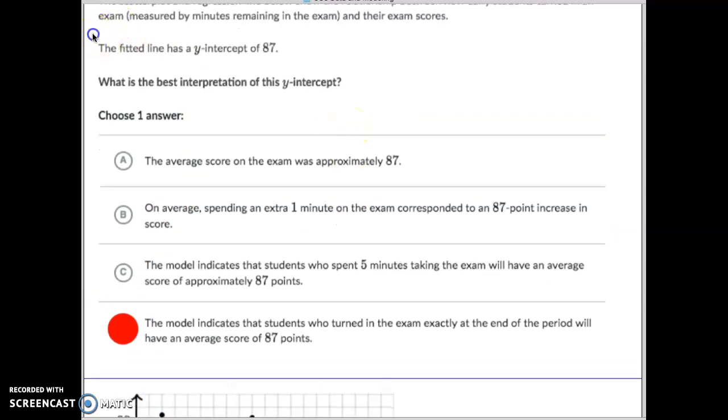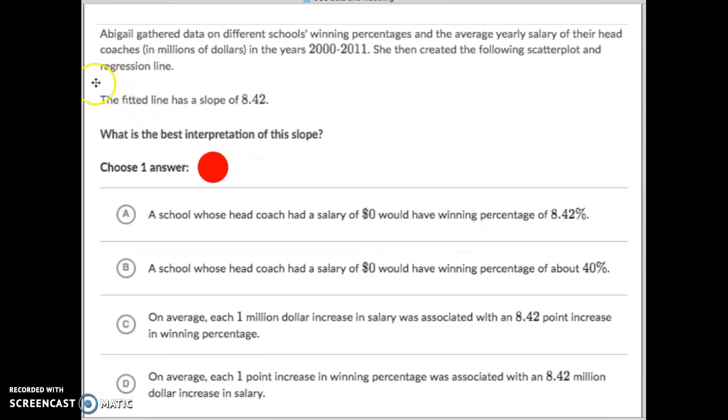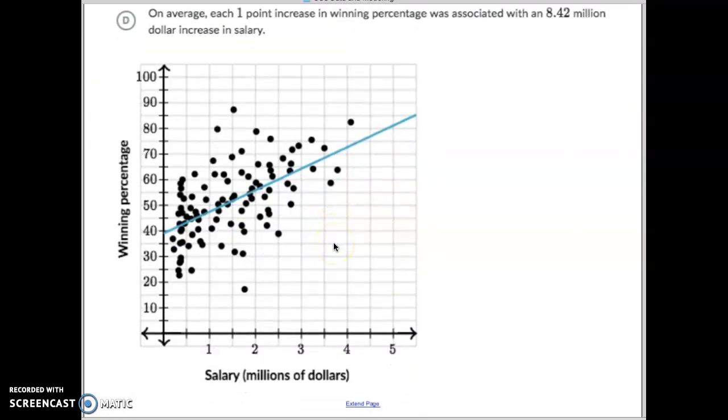Sometimes they're going to give it to you where you have to interpret the y-intercept, and sometimes they're going to give it to you, like this one, where you have to interpret the slope of it. Remember, the slope is how much something is increasing or decreasing by. So we need to have the best interpretation for the slope.